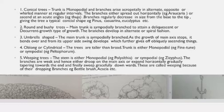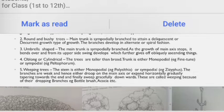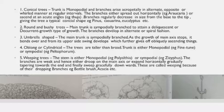Weeping trees: examples are Ziziphus and Polyalthia. The stem is either monopodial in the case of Polyalthia or sympodial in the case of Ziziphus. Branches are weak and either droop down from the main axis or expand horizontally and may touch the soil. These are called weeping trees because of the drooping of the branches. Other examples are bottle brush and Acacia.